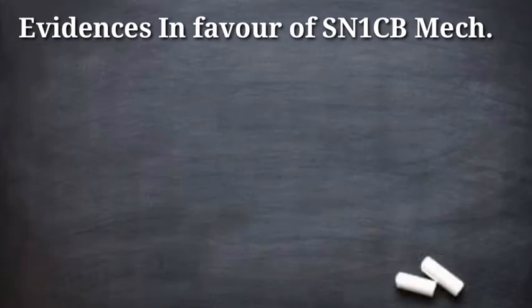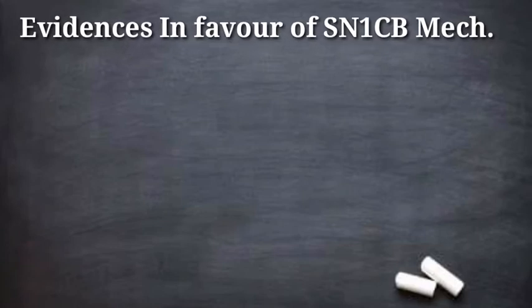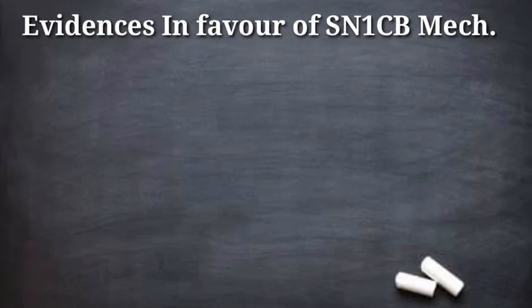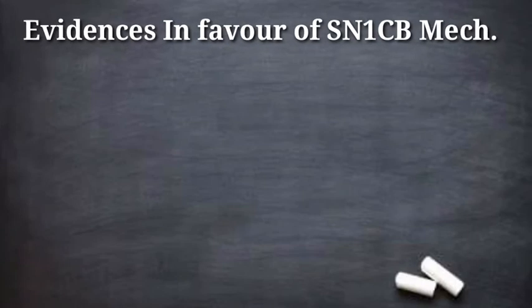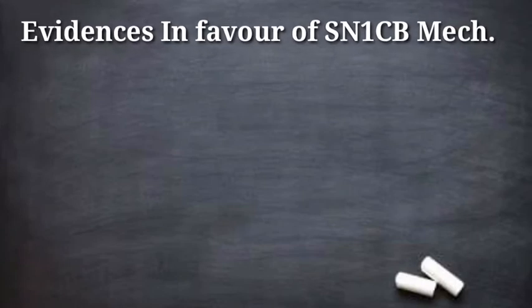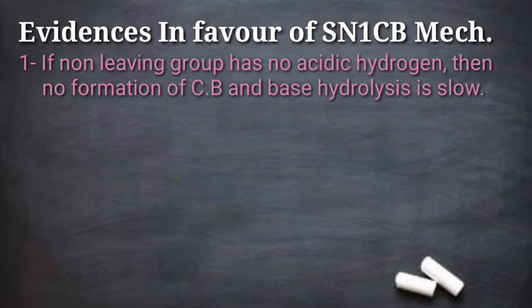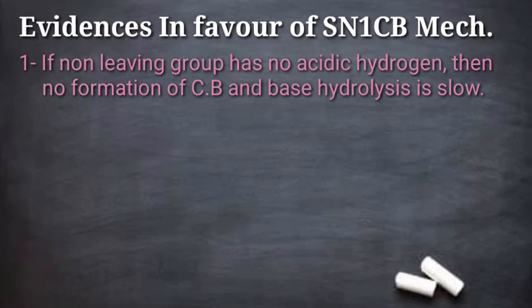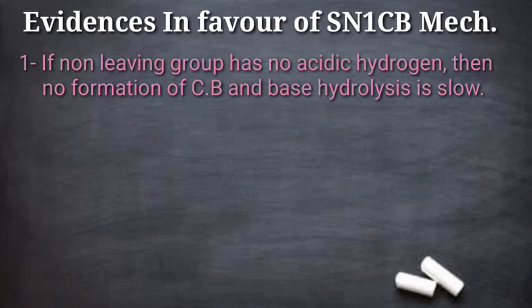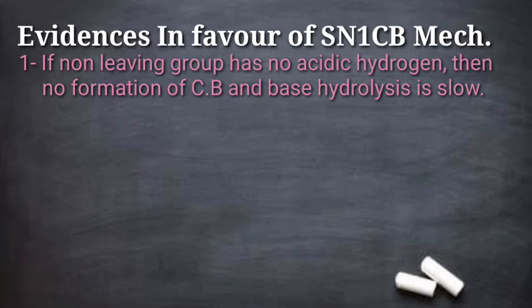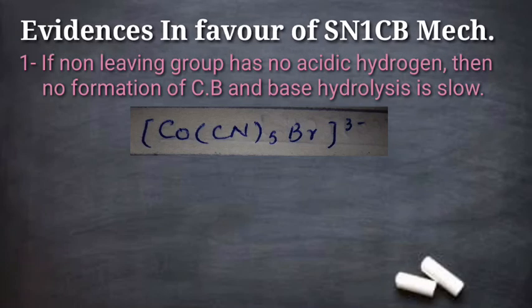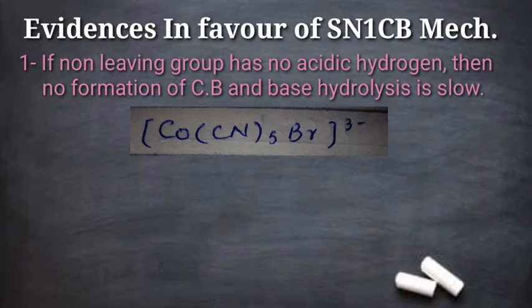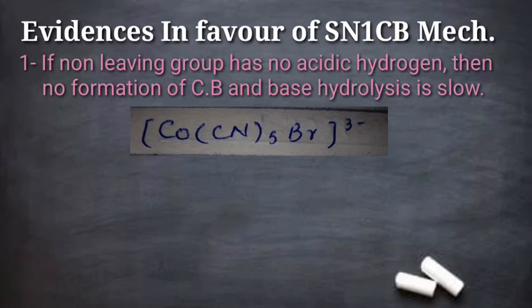There are two possible mechanisms for base hydrolysis: SN2 mechanism and SN1CB mechanism. SN1CB mechanism is more favorable. Evidence 1: if we have a complex with no acidic hydrogen — for example, a cyanide ion as a non-leaving group ligand — there is no conjugate base formation, and the base hydrolysis rate is slow. This supports SN1CB, since conjugate base formation is essential.